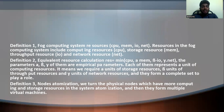Definition 2: equivalent resource calculation. R equals the minimum of alpha·CPU, beta·memory, beta·IO, gamma·NET. The parameters alpha, beta, and gamma are empirical parameters. Alpha represents a unit of computing resources, beta represents units of throughput resources, and gamma represents units of network resources. Together they form a complete state to define equivalent resource capacity.